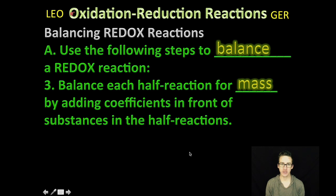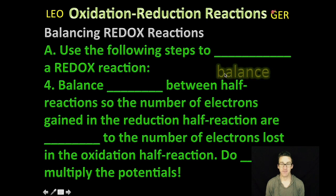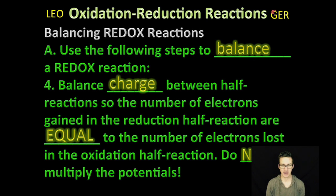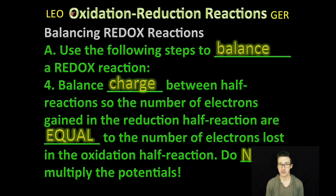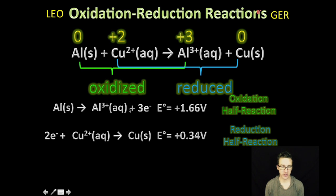Step number three: we are going to balance each half reaction for mass by adding coefficients in front of the substances in the half reactions. As we look at this reaction, it's already balanced for mass — I have one aluminum on each side and one copper on each side. Step four is to balance for charge between half reactions, so the number of electrons gained in the reduction half reaction must equal the number of electrons lost in the oxidation half reaction. When you do this, it's important not to multiply your potentials, as we'll see. In my oxidation half reaction I've lost three electrons, but in my reduction half reaction I've gained two electrons.